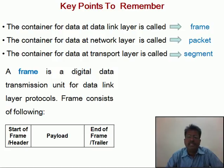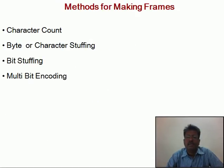What is a frame? A frame is a digital data transmission unit for data link layer protocols. A frame consists of the following three fields: header, payload, and trailer. The header is the start of the frame, the payload is the actual data to be transmitted, and the trailer is the end of the frame. Data is covered by the header and trailer, and header and trailer act as delimiters for the payload.